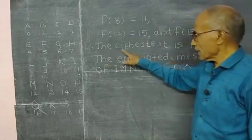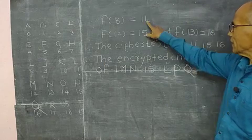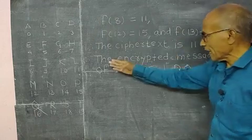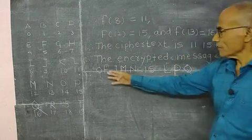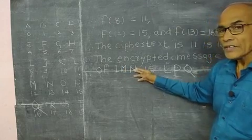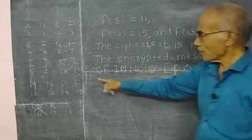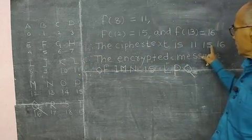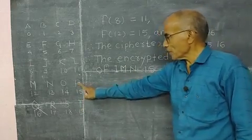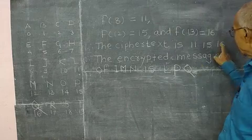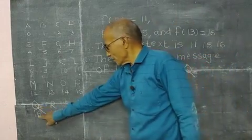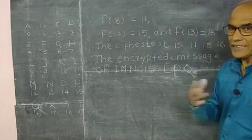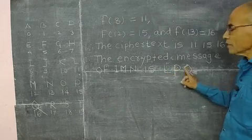So the encrypted message of I, M, N is 11, 15, 16. 11 is what? L. 15 is what? P. 16 is what? Q. So I, M, N is encrypted as L, P, Q.